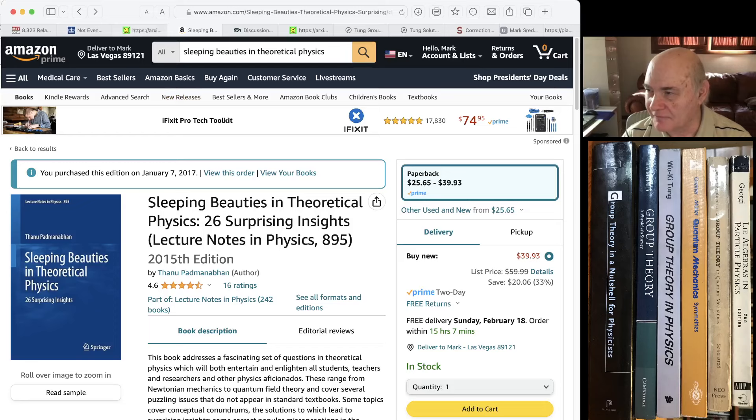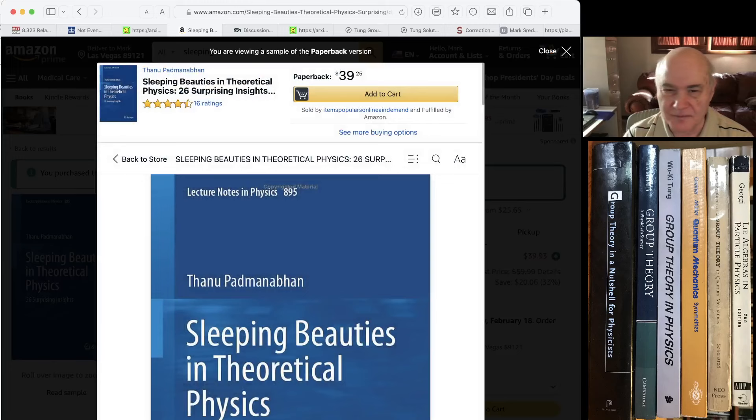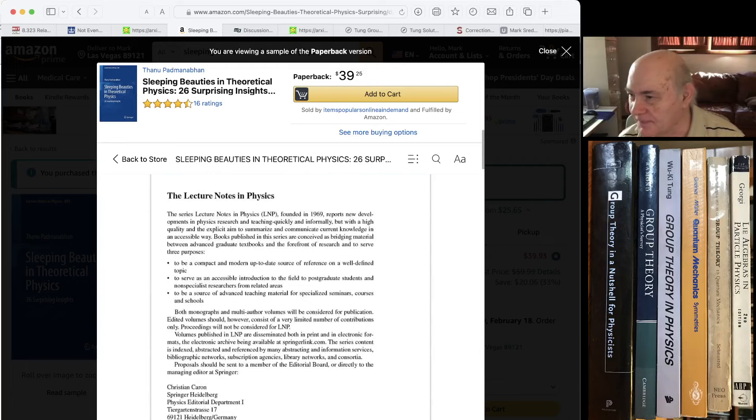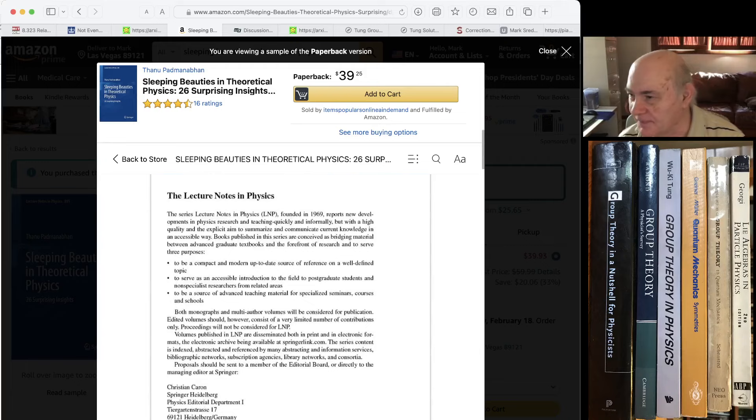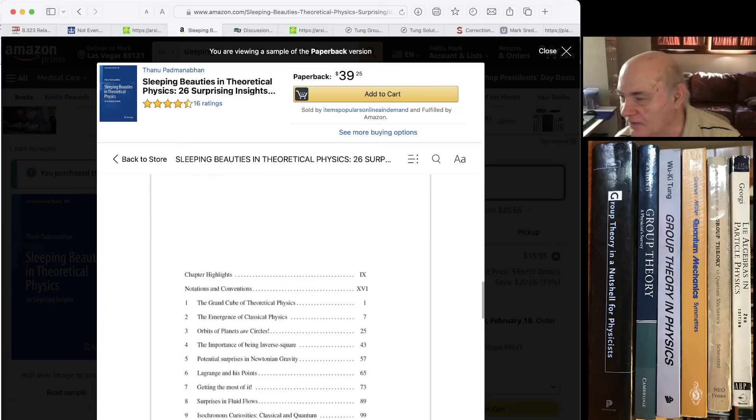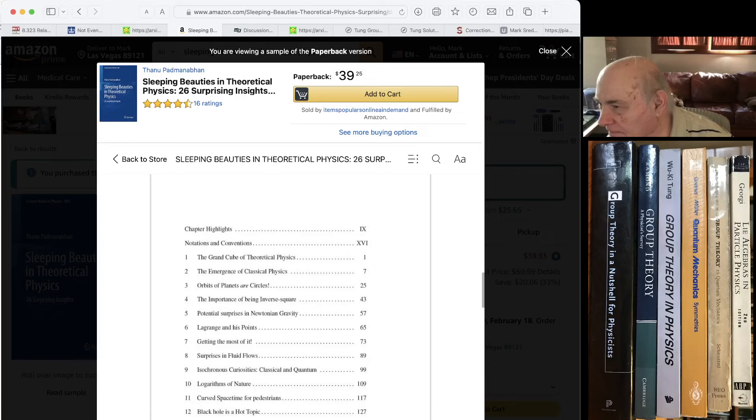It's got, like, 26 chapters on, there's another set of books a long time ago called Surprises in Theoretical Physics. This is sort of like that, except more detailed. It's at the advanced undergraduate level, and he's got, like, 26 things where he covers things that you wouldn't necessarily know.